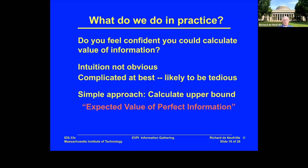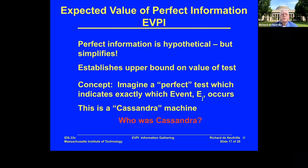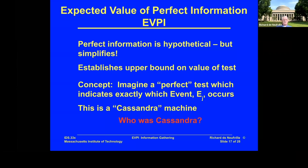So what do we do in practice? The simple approach is to calculate the upper bound — this is known as the Expected Value of Perfect Information (EVPI). The EVPI is totally hypothetical; it does not exist. But it simplifies the analysis and gives you an upper bound, which is useful because we can definitely exclude some tests if they exceed that upper bound of possible value.